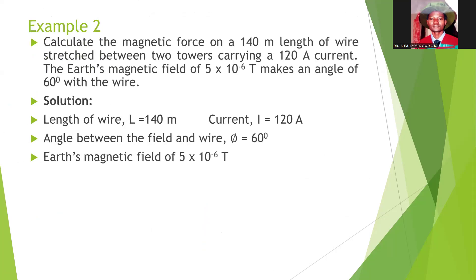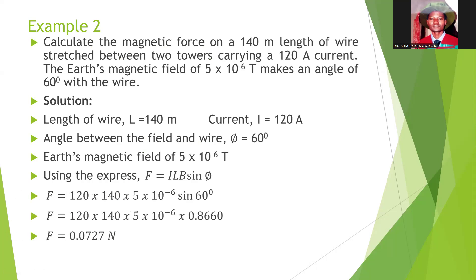Let's look at an example using the expression we just derived. We have to calculate the magnetic force on a length of wire of 140 meters. Using the given parameters and substituting into the expression, we have that the magnetic force experienced by the conductor will be equal to 0.0727 newtons.